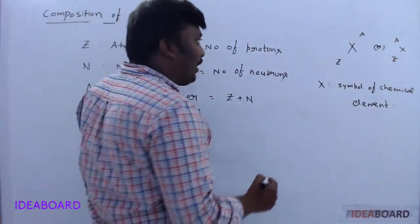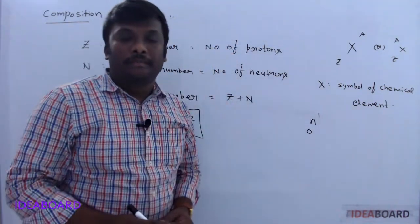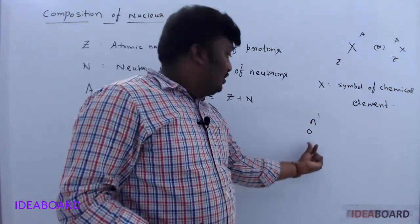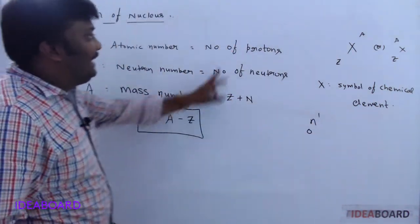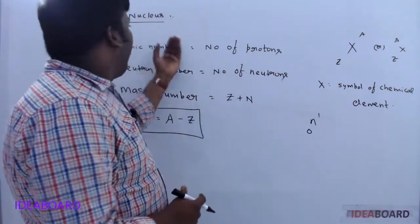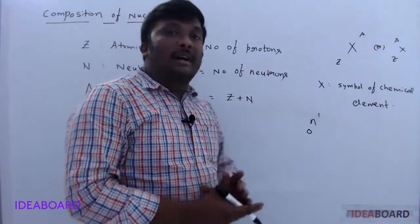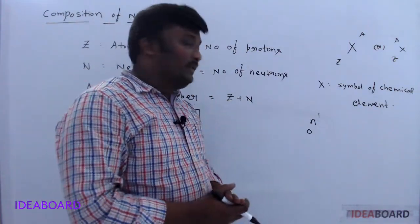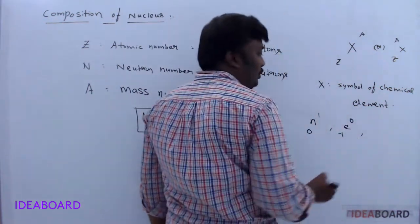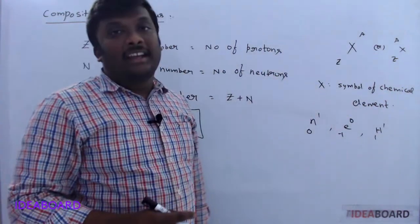For example, a neutron is represented as N with Z=0 and A=1 — meaning there is no charge (atomic number 0) and mass number is 1. An electron is indicated as E with -1 and 0. A proton is indicated as P with Z=1 and A=1, or H11.